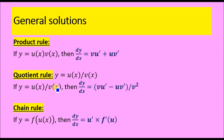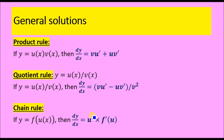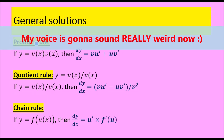The quotient rule is similar to the product rule, except you subtract instead of add, and divide by v squared. The chain rule is different — you differentiate the inside first, pull it out, then differentiate the outer function. For example, with sin(something), the sin differentiates to cos, and you differentiate the inside and pull it out. I'll show worked examples of the product rule, quotient rule, chain rule, and converting quotient to product.